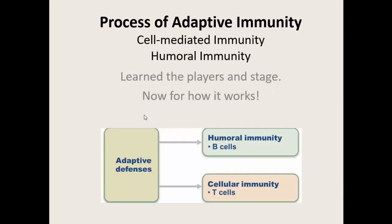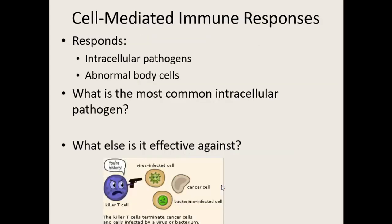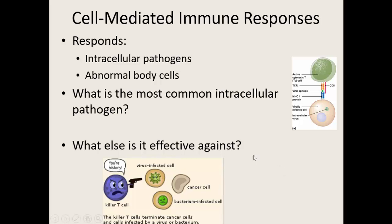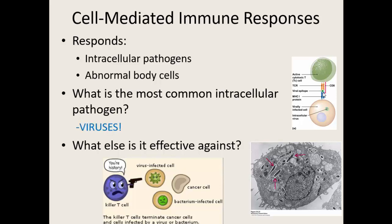Now we know all our players and the stage: the immune system, the lymphatic system, different types of lymphocytes — various types of T cells and B cells — the humoral branch and the cell-mediated branch. The cell-mediated branch responds to any type of intracellular pathogen as well as any other abnormal body cells. These are the cells that recognize some type of intracellular pathogen — whether it's a virus, it has to attach to the epitope on an MHC protein. The most common intracellular pathogens by far are viruses, and this branch is also effective against abnormal body cells such as cancerous cells.